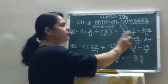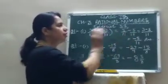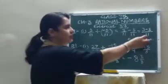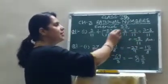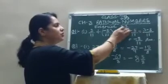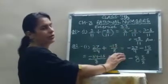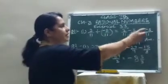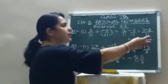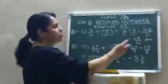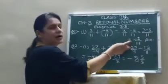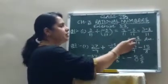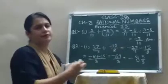Both the denominators are 11, so the LCM of 11 and 11 is 11 only. You simply subtract the numerators, so you get 3 minus 5 upon 11. 3 minus 5 is minus 2, so the answer is minus 2 upon 11.